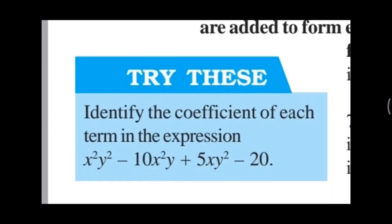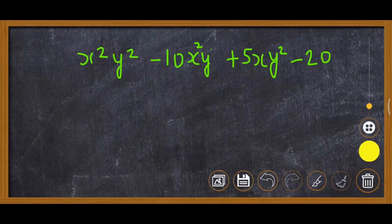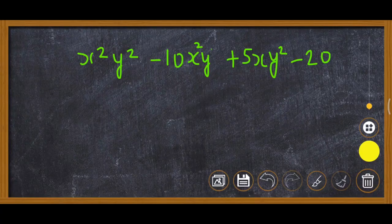Now this is the second Try These given on page number 128, Chapter 9: Algebraic Identities and Expressions. In this question, you can see that you need to identify the coefficient of each term in the following expressions. So one by one we will write the expressions and then we will write the coefficient of each term.